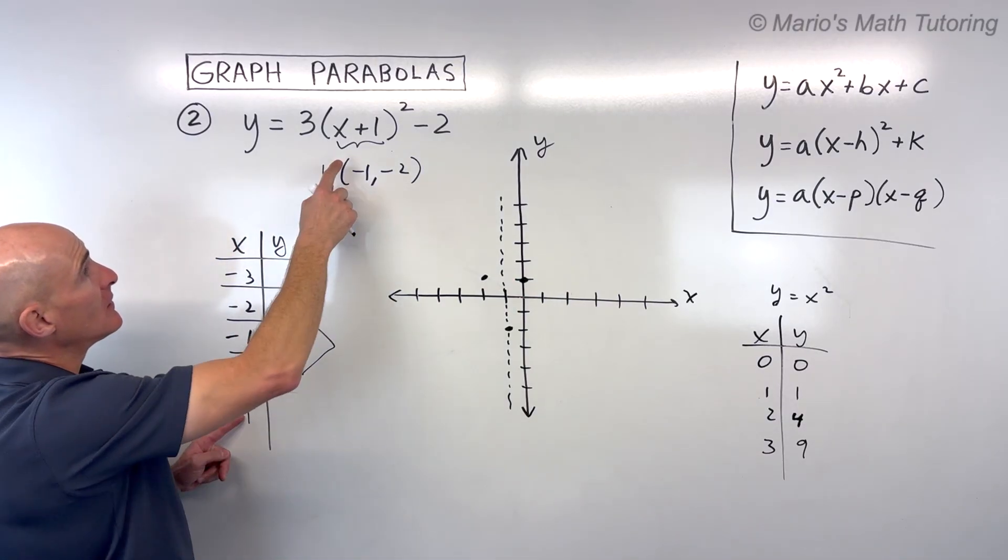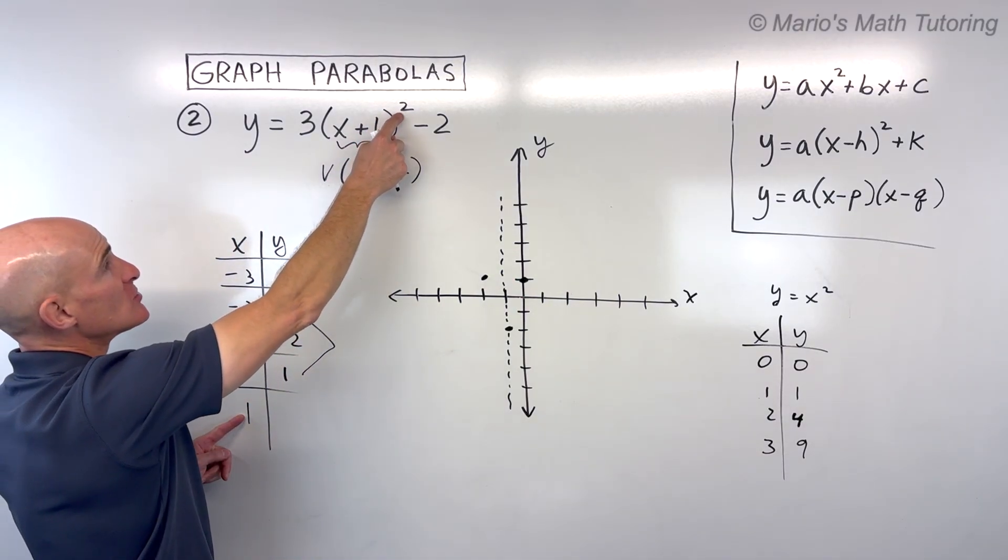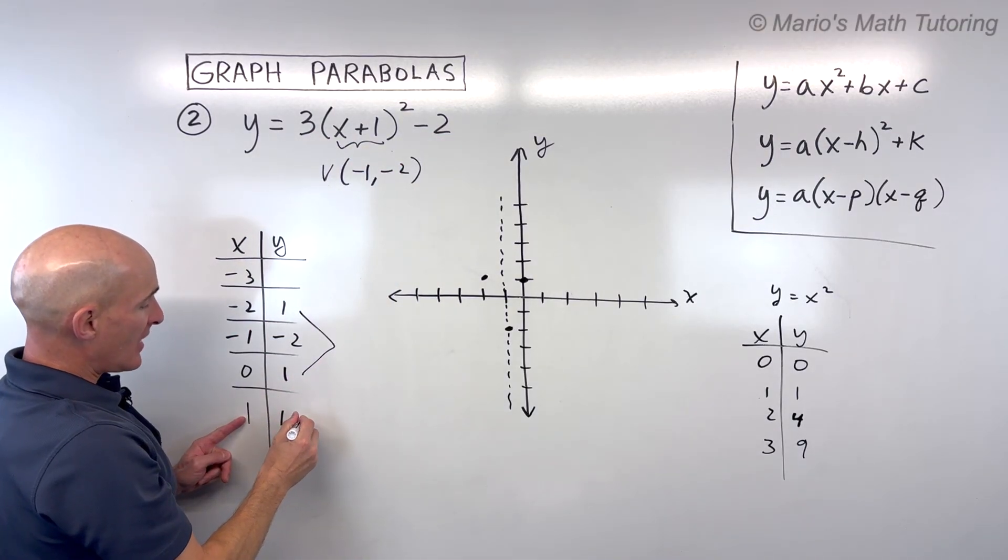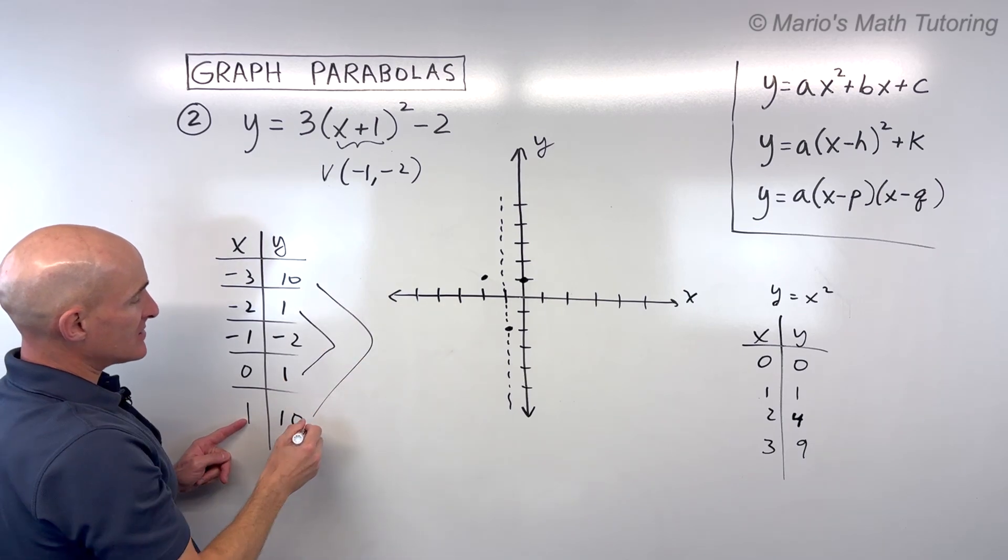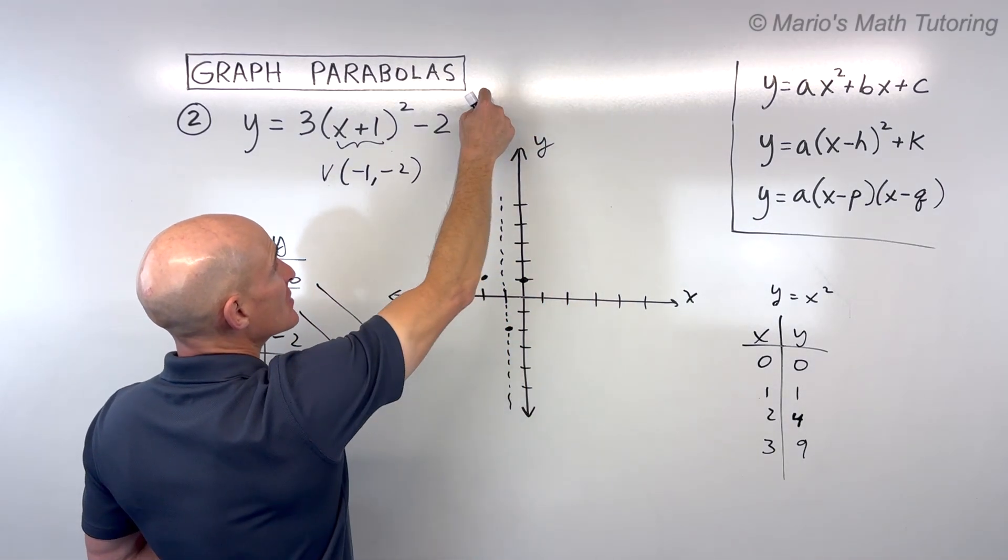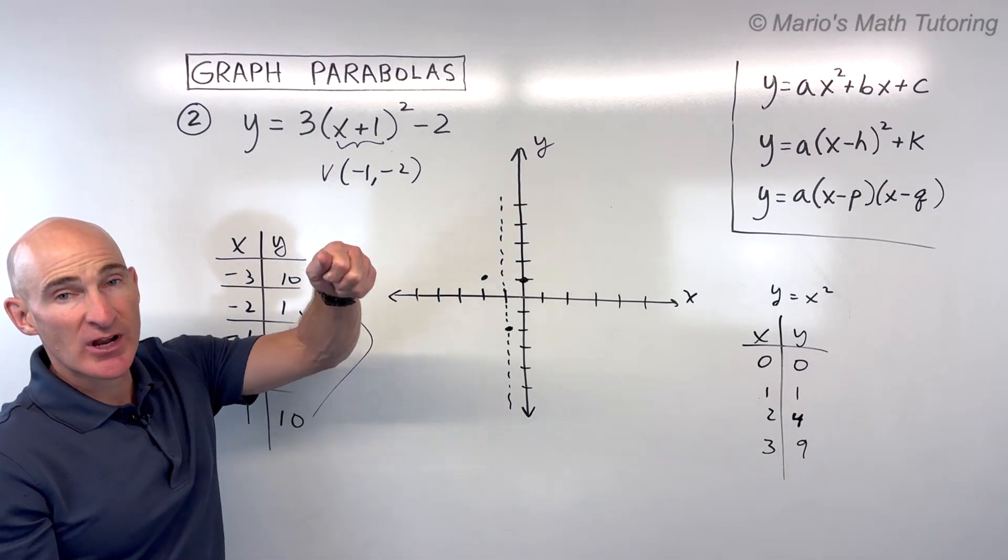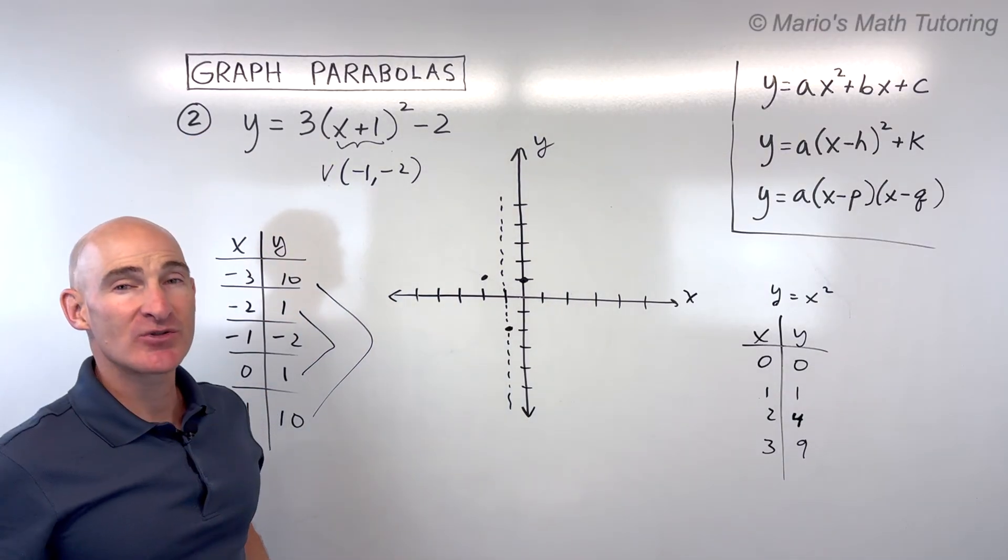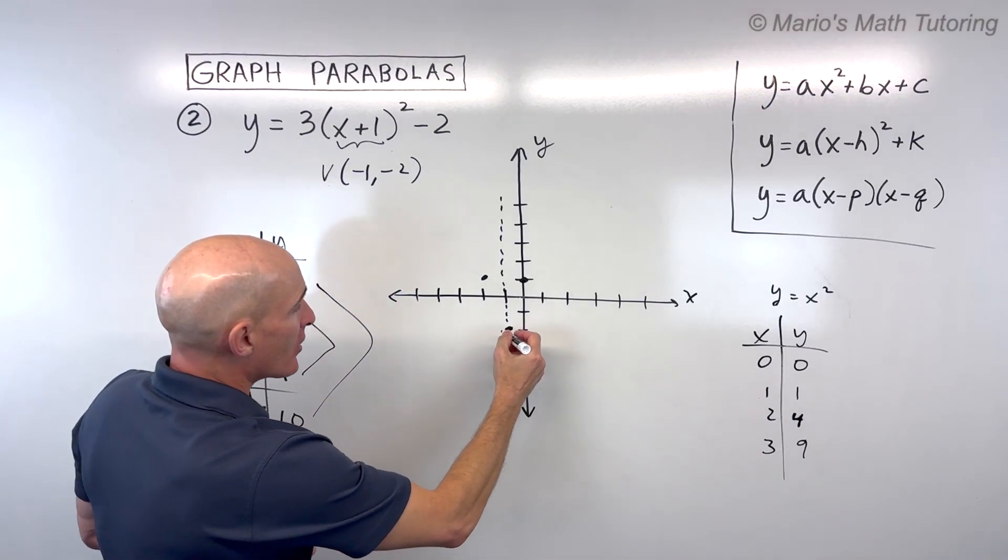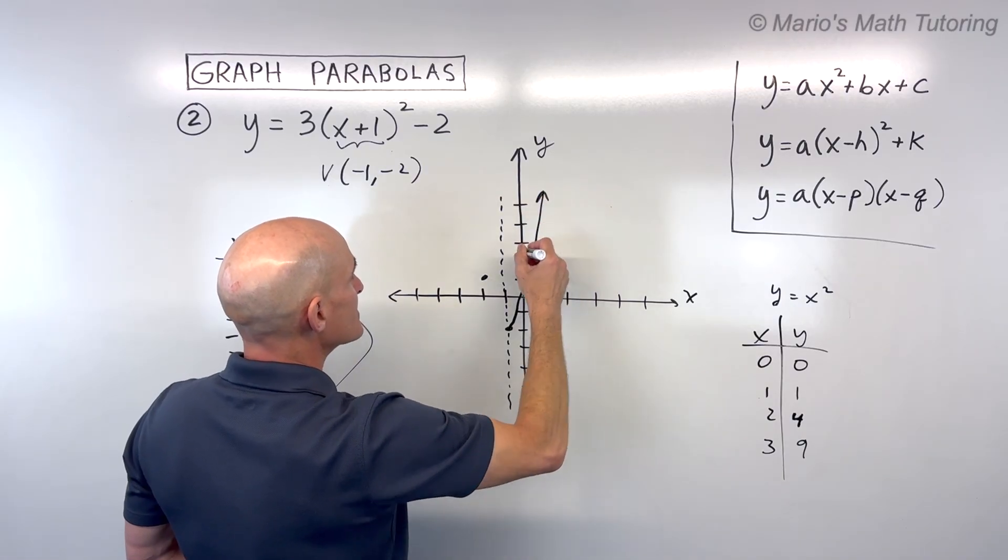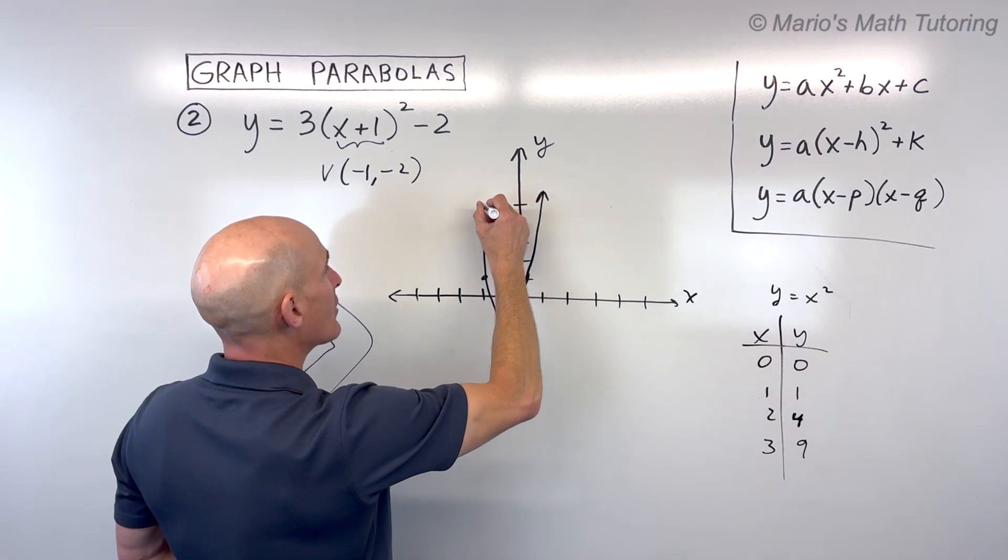If we plug 1 in, 1 plus 1 is 2. 2 squared is 4. Times 3 is 12. Minus 2 is 10. So that is an additional point. We can go right 1 up 10 way up here. Or over here, it's also going to be 10. So you can see this is being stretched quite a bit, and that's because this a value is 3. It's stretching it by a factor of 3. So our graph now is going to look something like this U shape.